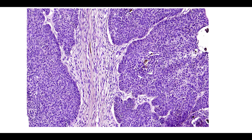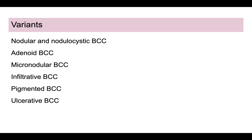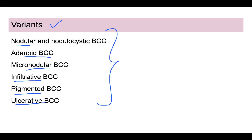In the histological picture you can see the retraction artifact clearly, along with the very blue tumor arranged in peripheral palisading at the ends. Some tumors can also contain melanin in varied proportions. Various histological variants exist — including nodular, adenoid, micronodular, infiltrative, pigmented, and ulcerative — but we will not go into their details. Microscopically, the tumor has a good prognosis and is easily treated by local excision.